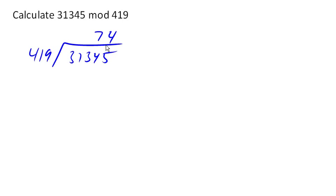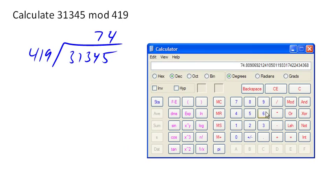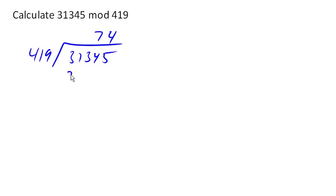And so one thing I could do is I could just multiply 74 times 419 and find my remainder at this point. And in fact, that's not too bad to do. We could say 74 times 419 is 31006, and then subtract to find the modulus. But I'm actually gonna show you another way to do it.